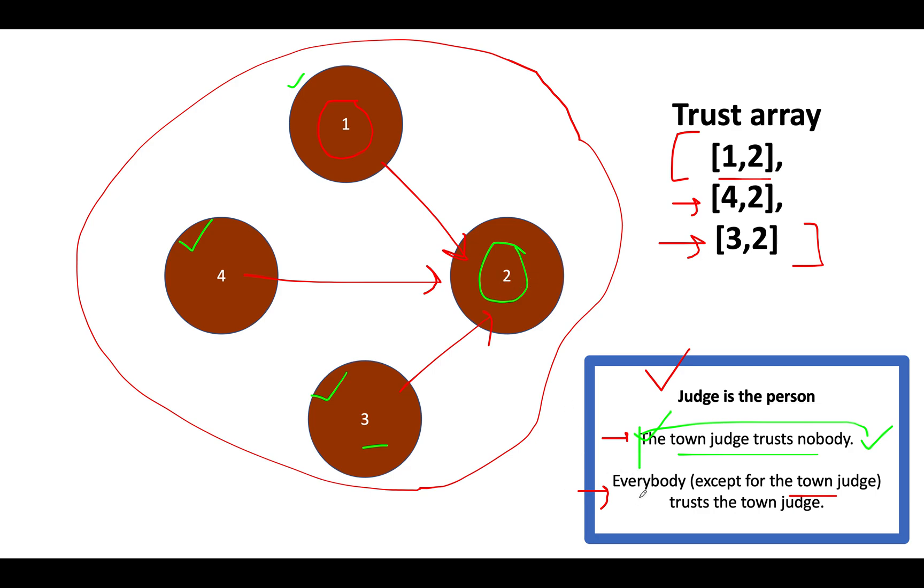Now, comes the other concern. Is everyone in the town trusting the town judge? The answer is yes. How can we identify this value? We will count the number of in-degree incoming nodes at 2. What is that count? 1, 2 and 3. We also are aware of how many folks are present in the town, the value of n. If the number of incoming edges happens to be equal to n minus 1, then we can say that second condition is also met.